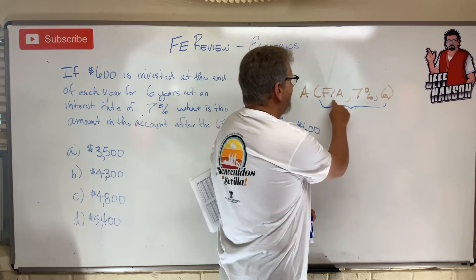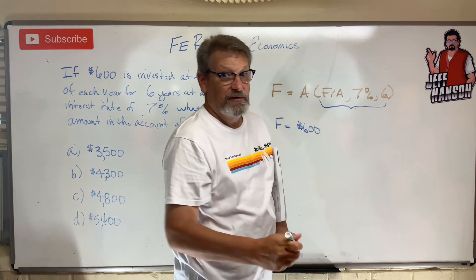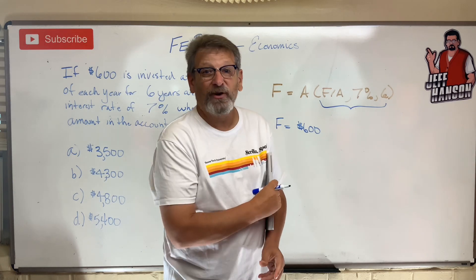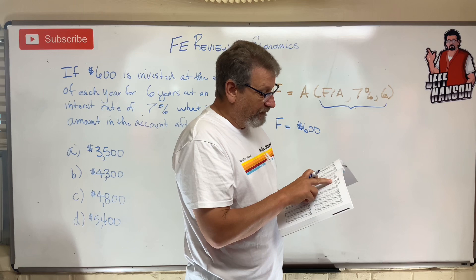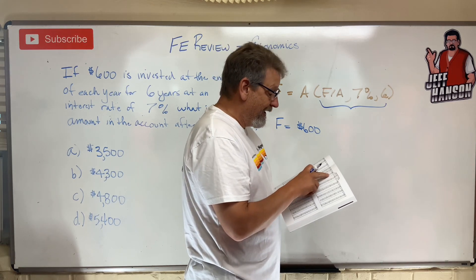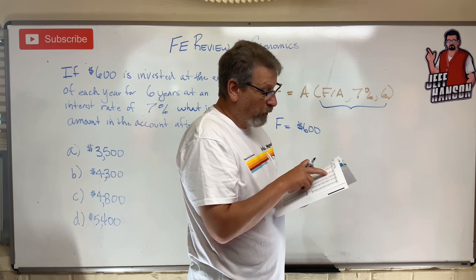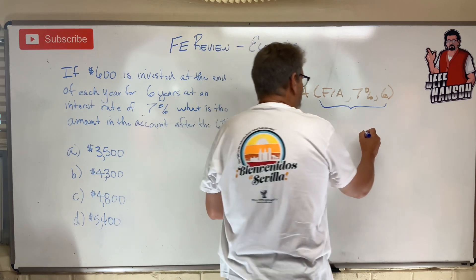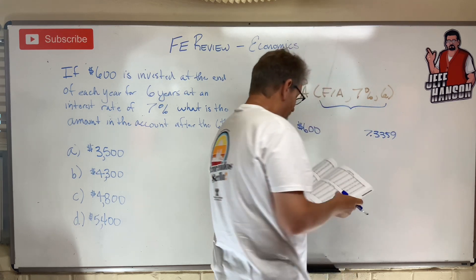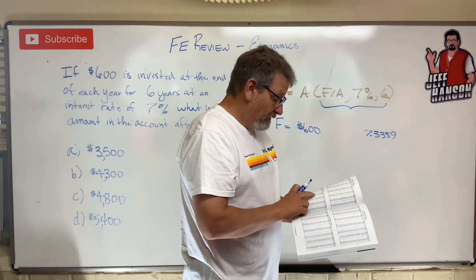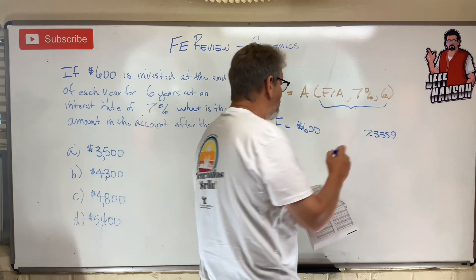So let's find that factor. We look up F given A at 8%, and F given A at 6%, then choose the number in between. Going to the 8% table: F given A for 6 years is 7.3359. And at 6%, F given A for 6 years is 6.9753.